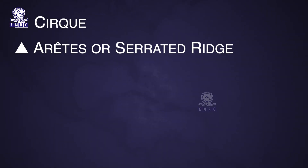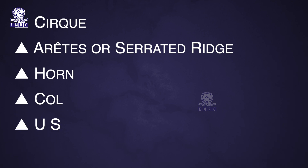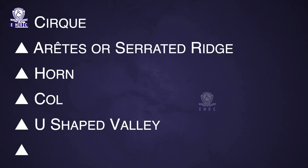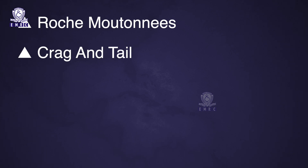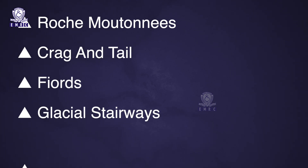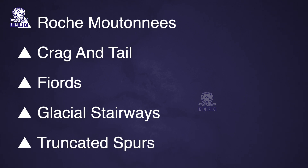The major landforms produced by glacial erosion are: Cirque, Aretes or Serrated Ridge, Horn, Col, U-shaped Valley, Hanging Valley, Roche Moutonnee, Crag and Tail, Fjords, Glacial Stairways, and Truncated Spurs.